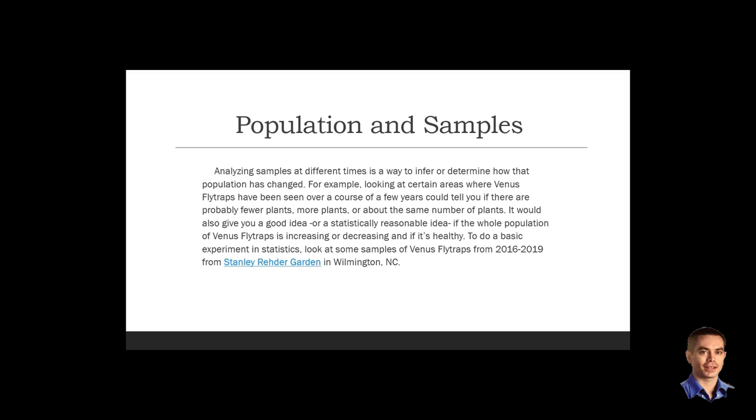Analyzing samples from different times is one way you can determine how the population changes. For example, if you look at certain areas where Venus flytraps have been over the course of a few years, that would tell you if there are fewer plants, more plants, or about the same number.